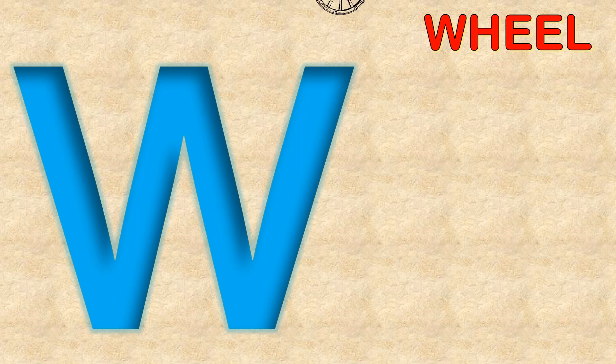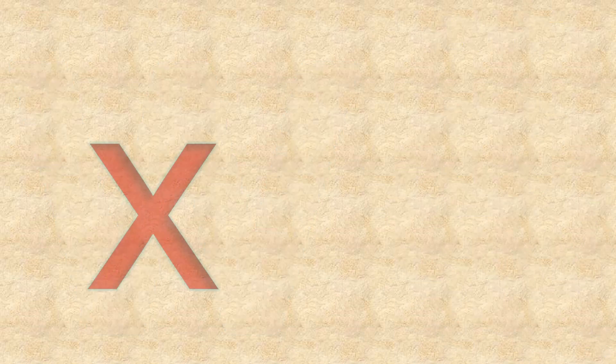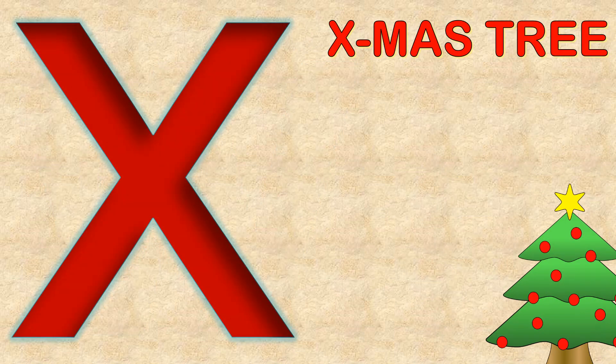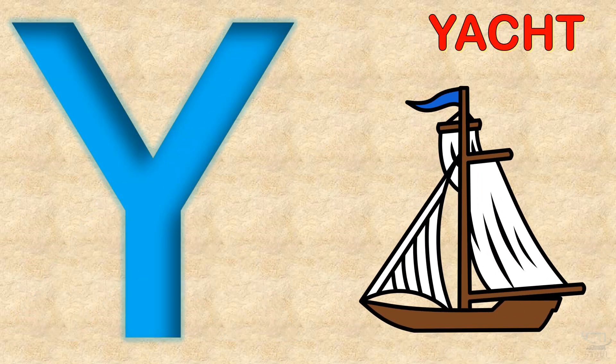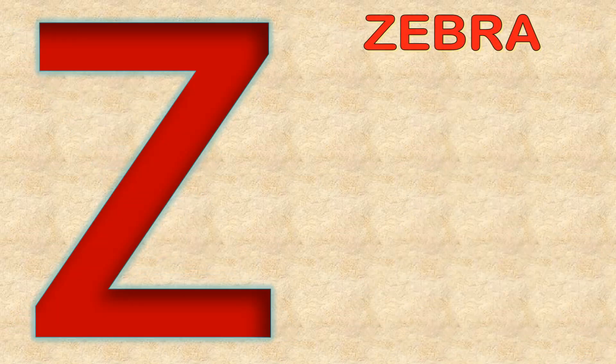W for wheel, X for x-mas tree, Y for yacht, Z for zebra.